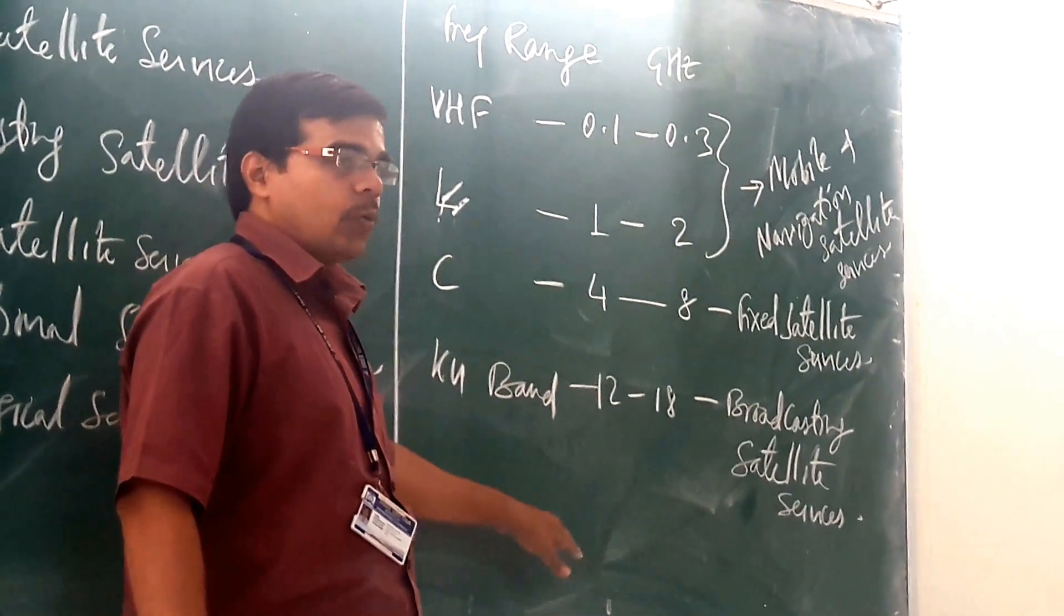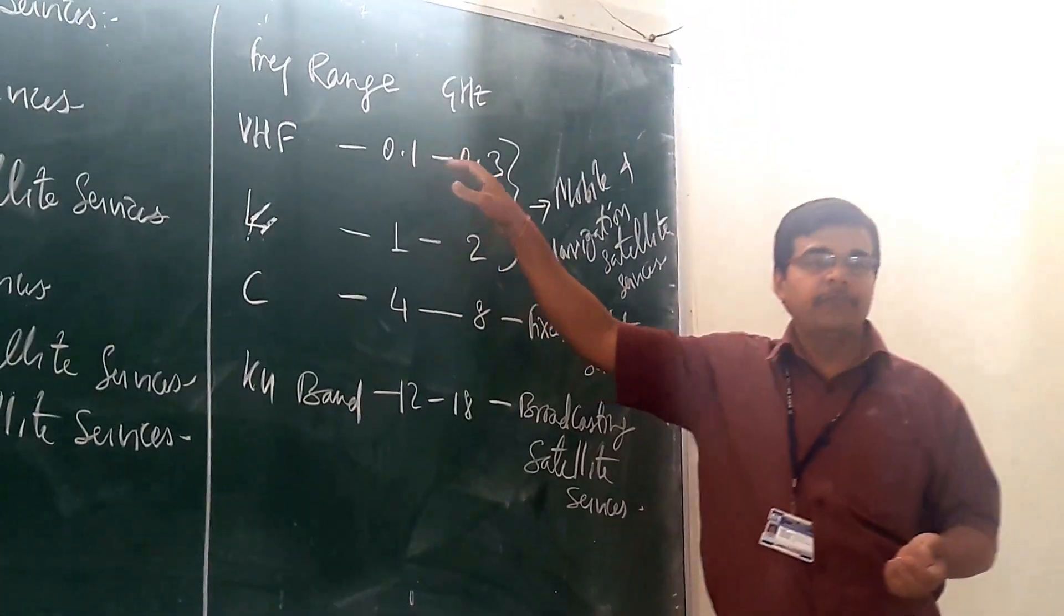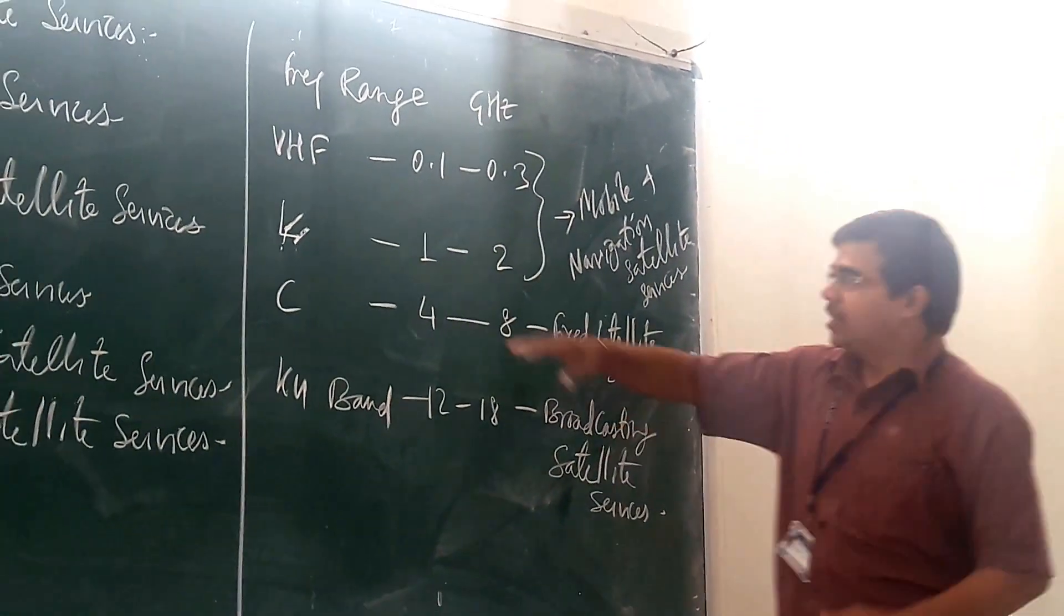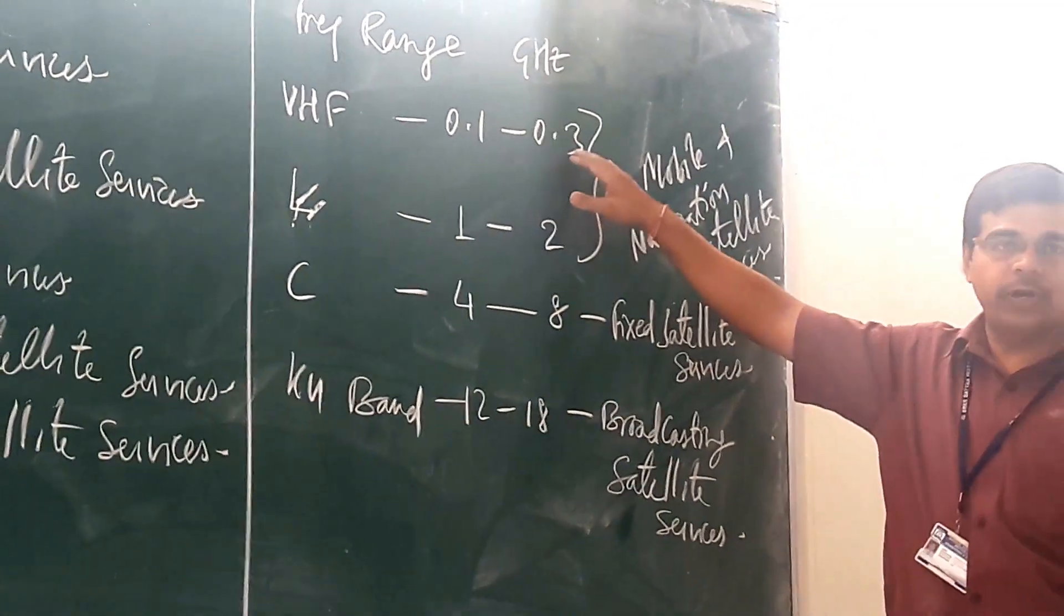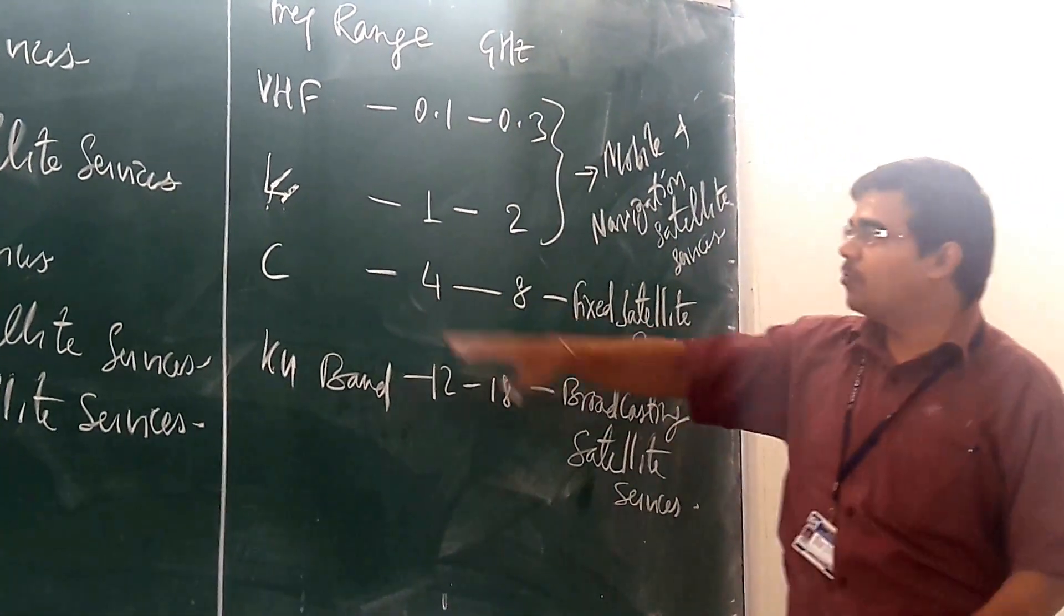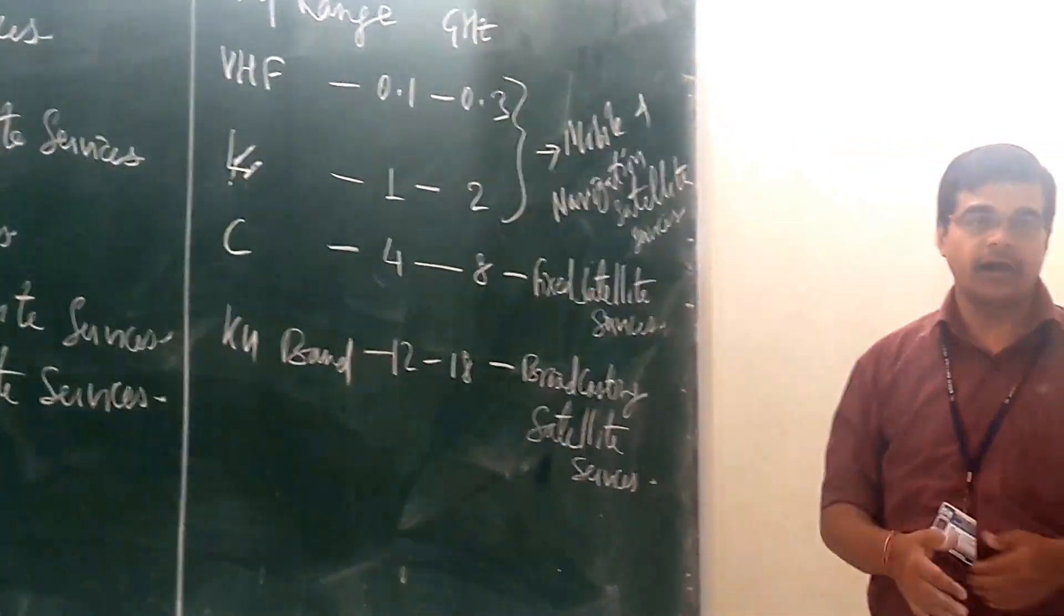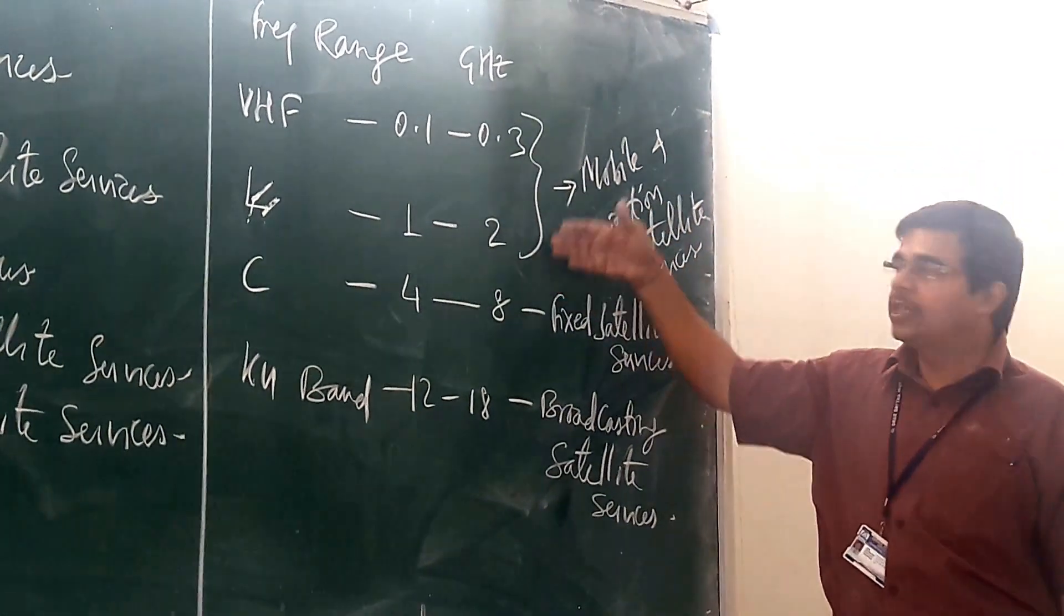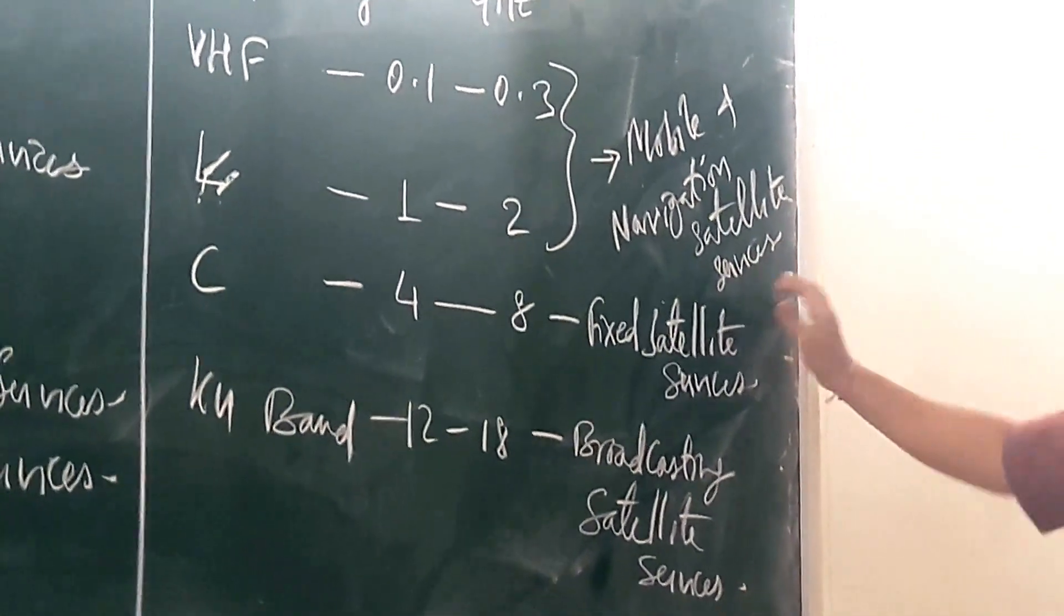If you are going for frequency, here the frequency is there in terms of gigahertz. They have allotted VHF frequency that is 0.1 to 0.3 and you are having the L band, this is from 1 to 2 gigahertz. So these two, they are allotted for your mobile and navigation satellite services.